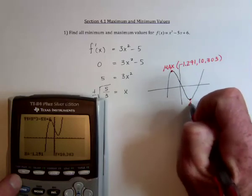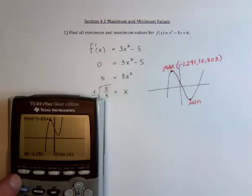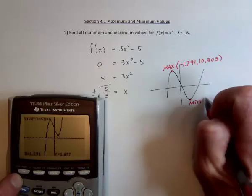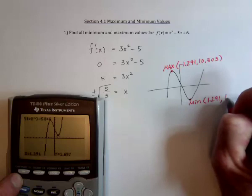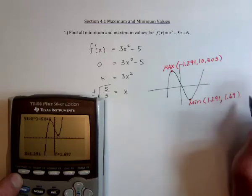And then the minimum value would be over here when we substitute the square root of 5 divided by 3 positive. So that's at 1.291, and for the y value, 1.697.